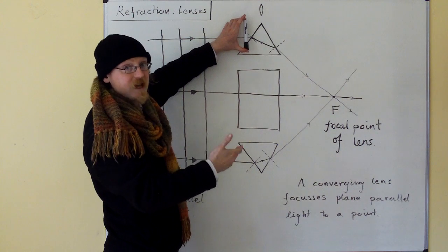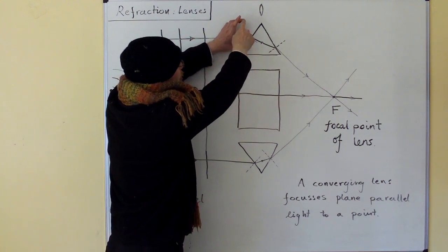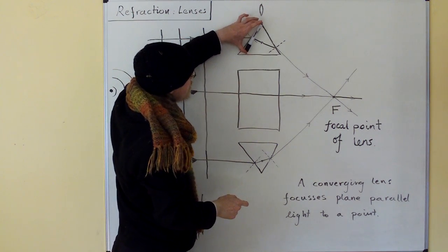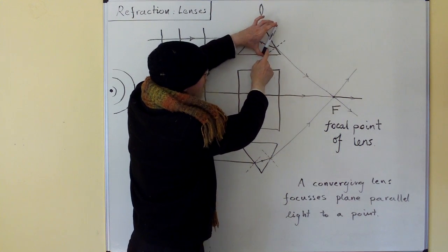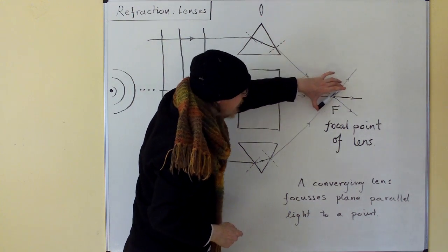Well, it isn't speeding up, it's staying the same speed. This slows down, this is going faster, so it's bent this way. Now this side is going faster, and this side is going slower, so it's bent this way again.